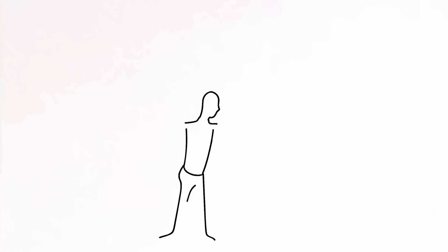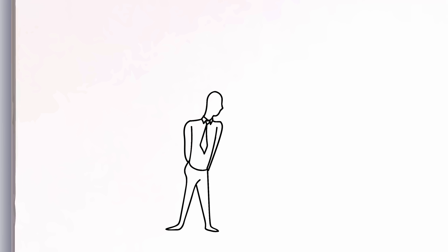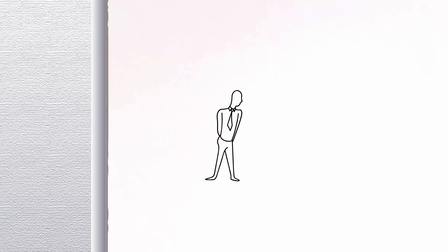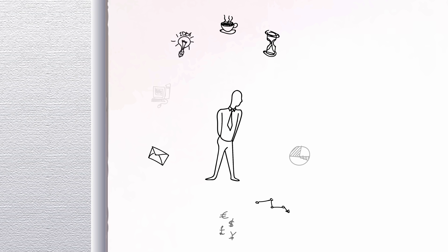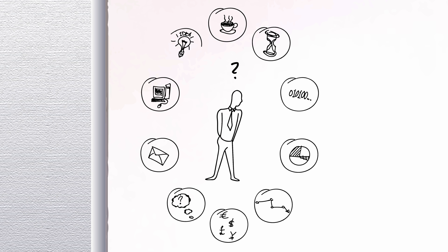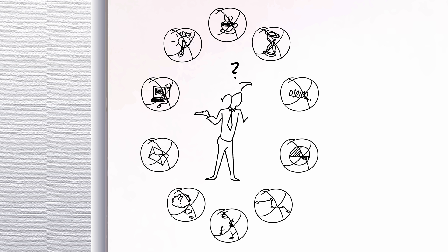One of the biggest challenges with data governance is that it is a daunting prospect and many people just don't know where to start. As a result, they can end up starting too many tasks and struggle, juggling more balls than is really needed at any one time.